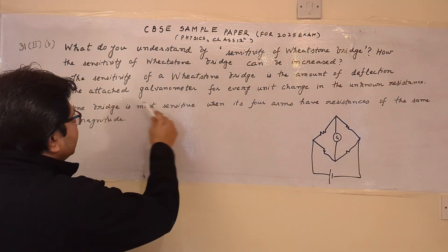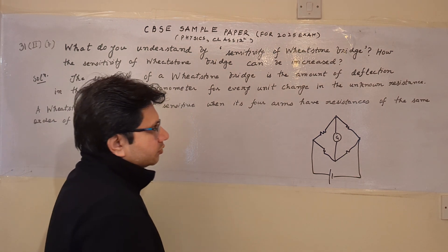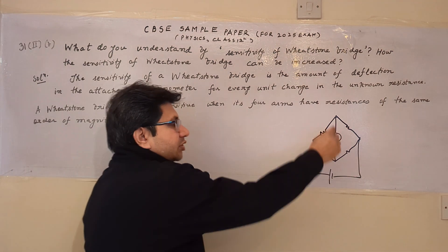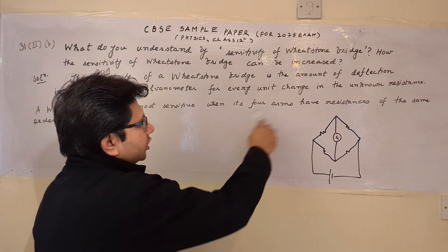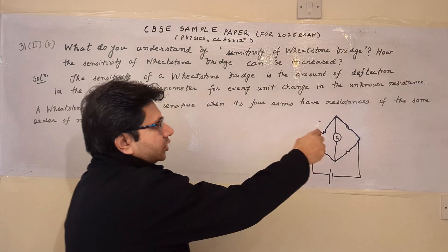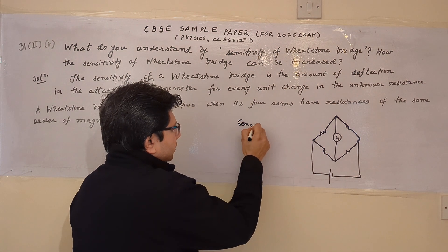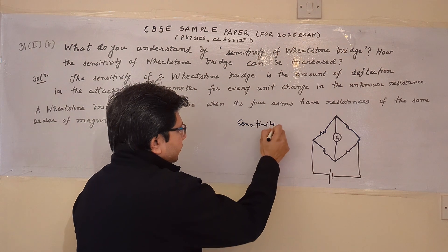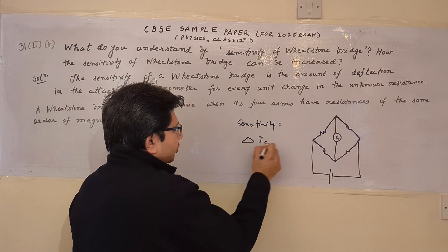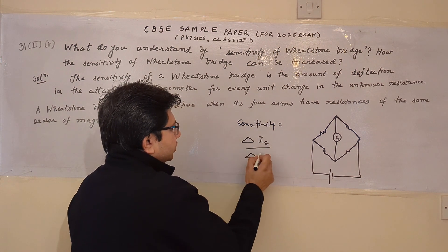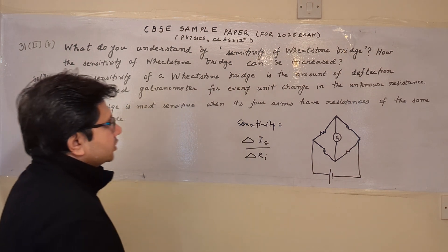The formula for sensitivity of the Wheatstone bridge is the amount of deflection in the galvanometer for every unit change in the unknown resistance. The deflection is basically due to the change in current. So we can say: sensitivity is equal to the change in galvanometer current upon the change in the unknown resistance. This is the sensitivity.